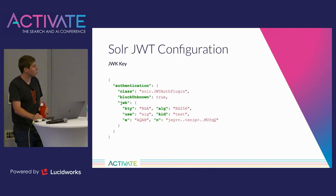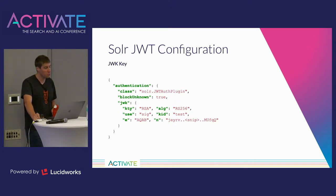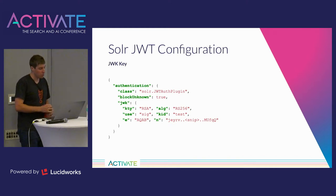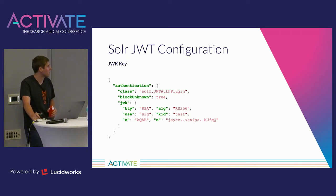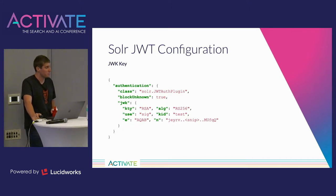Now let's see how Solr's JWT authentication plugin is configured. Right off the bat, Solr can't trust anything in the JWT until it verifies the signature. So the first order of business is getting Solr access to the identity provider's public key, typically in the format of a JSON Web Key (JWK) — a JSON blob containing the key contents and metadata about how to use the key, including the key type and signing algorithm.